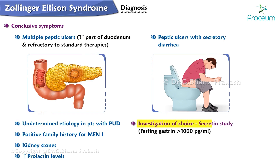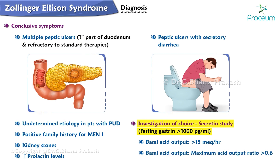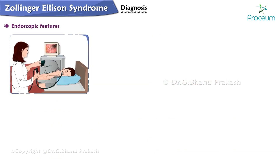The investigation of choice is the secretin stimulation study. Diagnostic criteria include fasting gastrin greater than 1000 picograms per milliliter, basal acid output greater than 15 milliequivalents per hour, and a basal acid output to maximum acid output ratio greater than 0.6. Over 90% of patients with Zollinger-Ellison syndrome develop peptic ulcers.